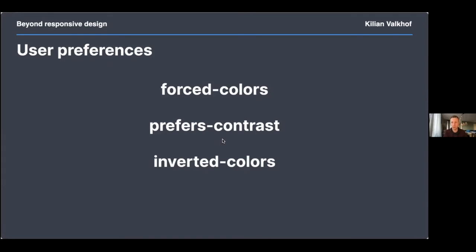For forced-colors, prefers-contrast, and inverted-colors, it's important to realize they don't serve the same purpose. Forced-colors overrides all your styling to something the user wants, often with significantly increased contrast. With prefers-contrast, the user still wants more or less contrast but it's up to you to make that happen, and they still want to see your design choices — just with adjusted contrast. Inverted-colors doesn't have an explicit goal; it's mostly used to make screens less bright before there were proper dark modes.